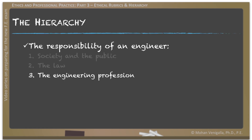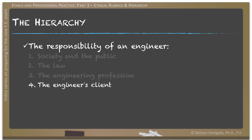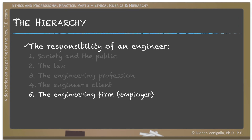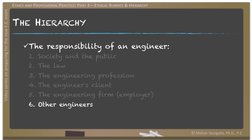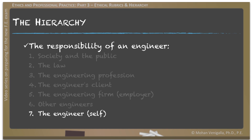Coming back to the hierarchy: the third priority of an engineer is to their own profession. The fourth is the engineer's client. The fifth priority is the engineering firm or employer. The sixth is to other engineers in the same discipline, and finally the last priority is the engineer himself or herself — the self.